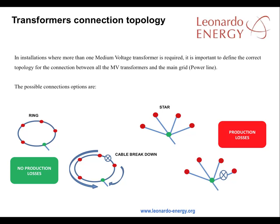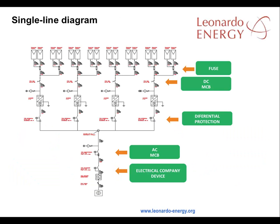In installations where more than one medium voltage transformer is required, it's important to define the correct topology for the connections across all medium voltage transformers and the power line on the main grid. This slide shows some of the characteristics of a ring versus a star topology. And here's a typical layout showing the electrical protections at a PV facility.